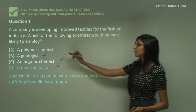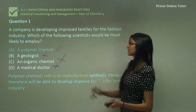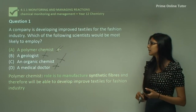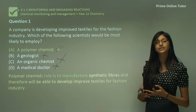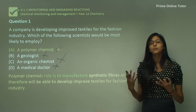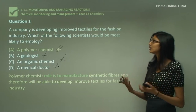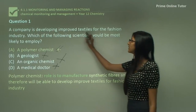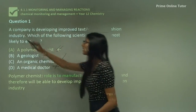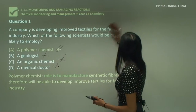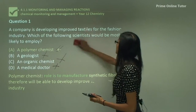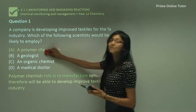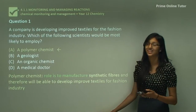So our answer is a polymer chemist. A polymer chemist helps us to manufacture synthetic fibers, and therefore would be able to provide different kinds of clothes and improve textiles for the fashion industry. So a polymer chemist is the right person you would want to employ to produce improved textiles for the fashion industry.